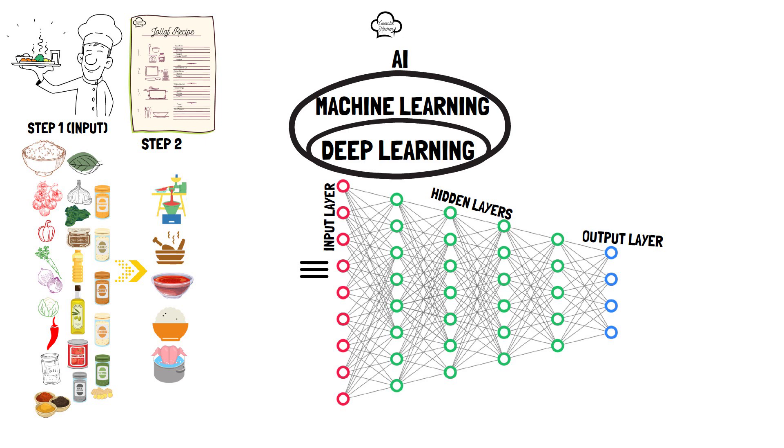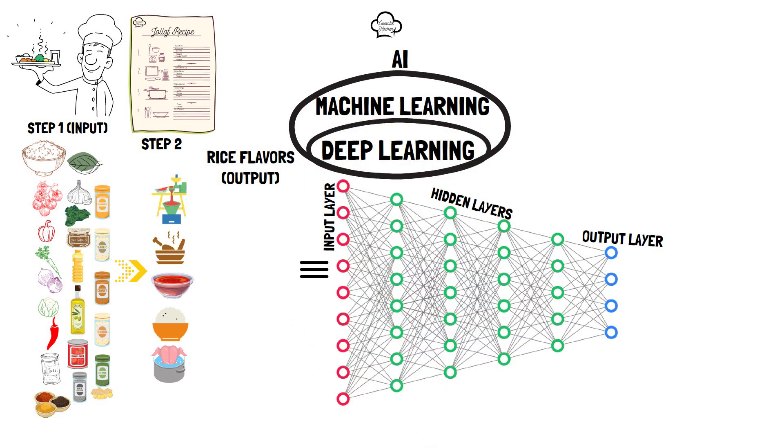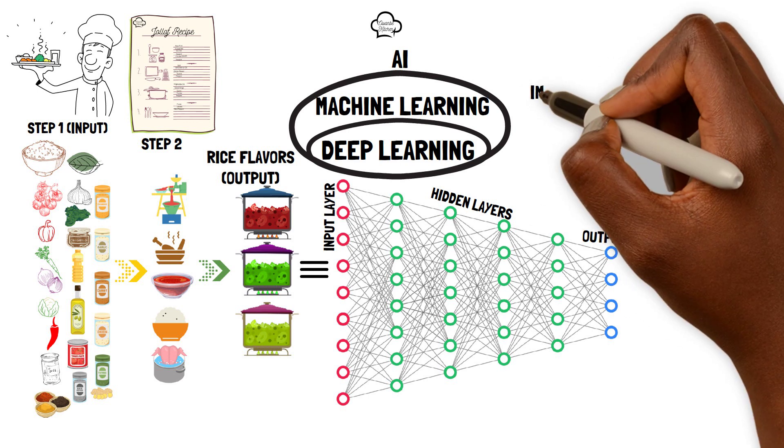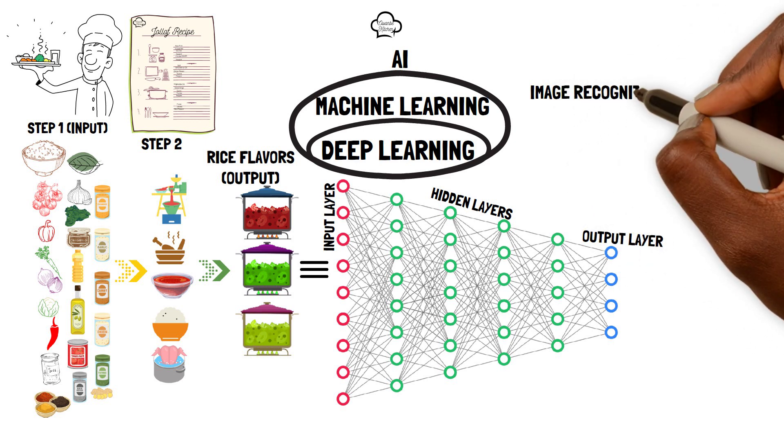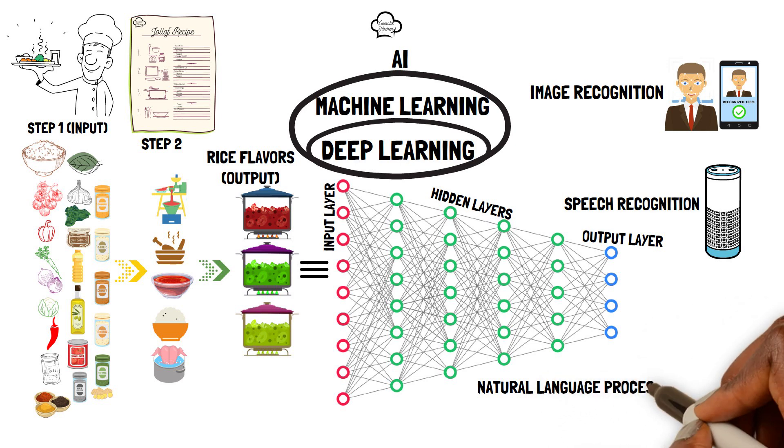With our advanced recipes, we can create extraordinary dishes and make different flavors and textures of rice. In the same line of thought, deep learning algorithms can generate incredible outcomes such as image recognition. Think of facial recognition for verifying identities. Speech language recognition. Think of Alexa. And natural language processing. Think of ChatGPT, and many more.